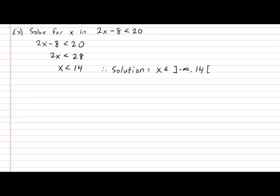And don't forget to give a proper conclusion. The solution to this inequality is anything smaller than 14. And we can use our interval notation to write that x has to be an element of negative infinity all the way to 14, not including 14. For our next example, I'd like to highlight one very, very dangerous spot when trying to handle inequalities. So, for our example, please put the following: Solve for x in the inequality negative 2x plus 3 has to be bigger than or equal to 15.